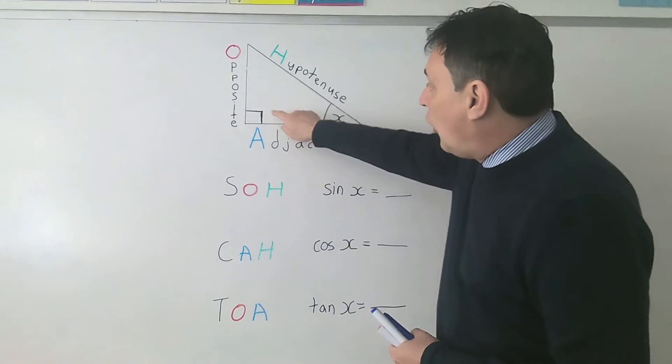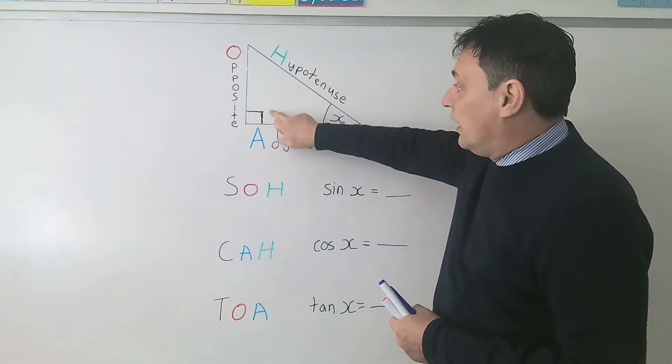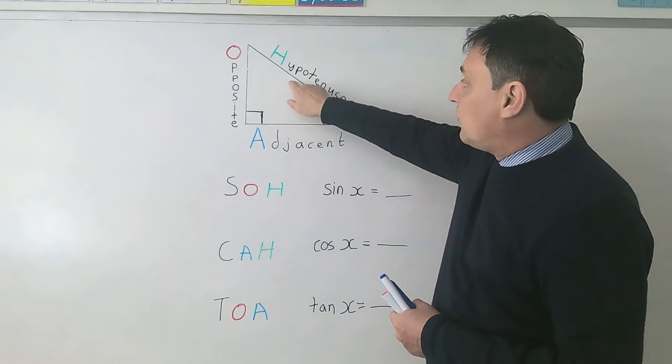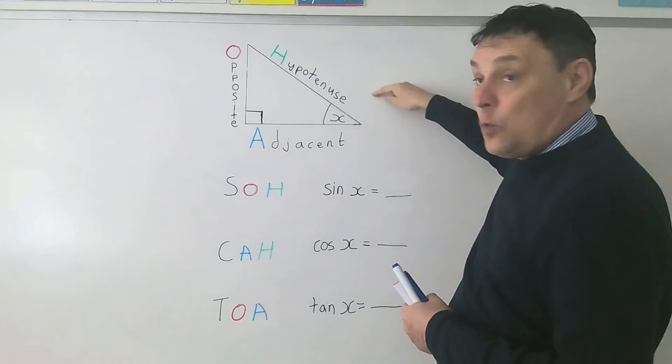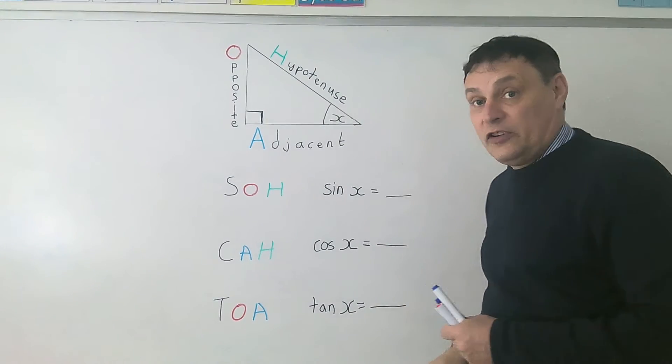Finally the side opposite that right angle there, so there's the right angle, so opposite the right angle, it doesn't touch the right angle and it's also the longest side, we're going to call the hypotenuse.